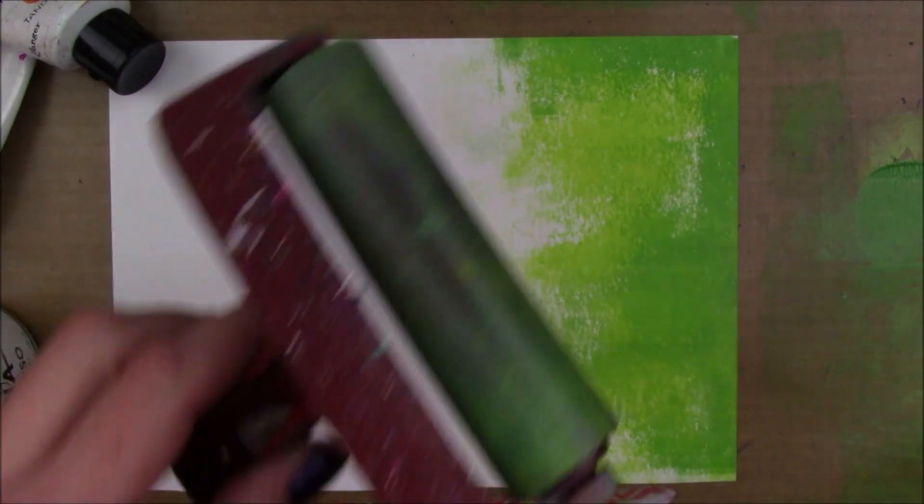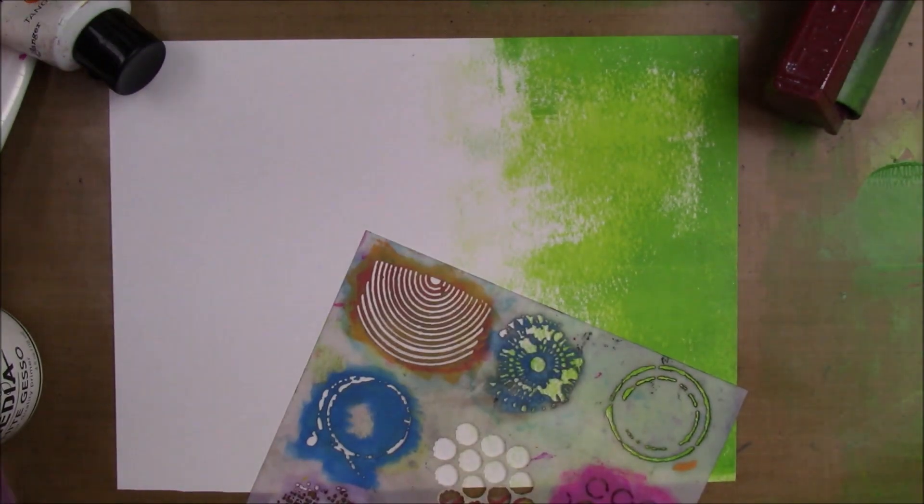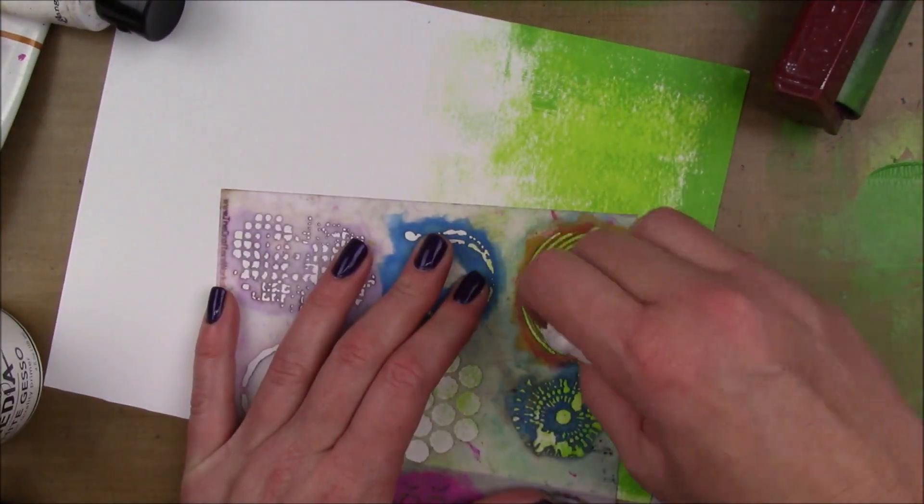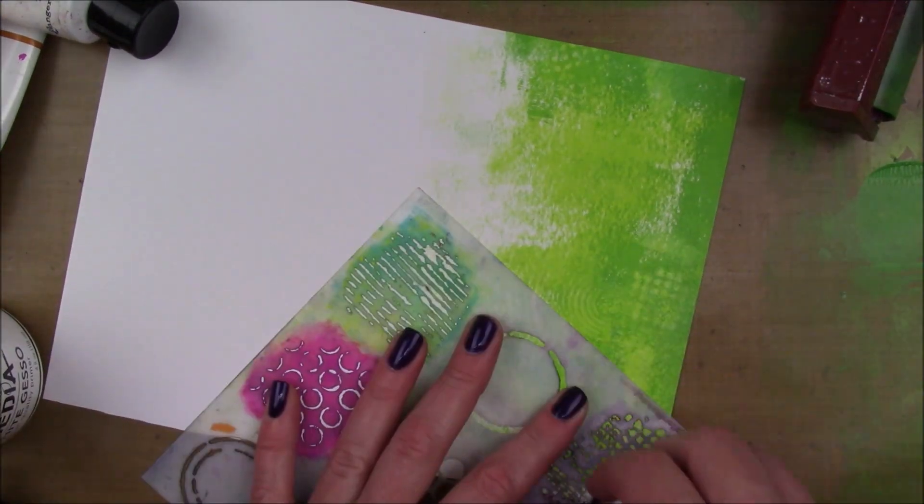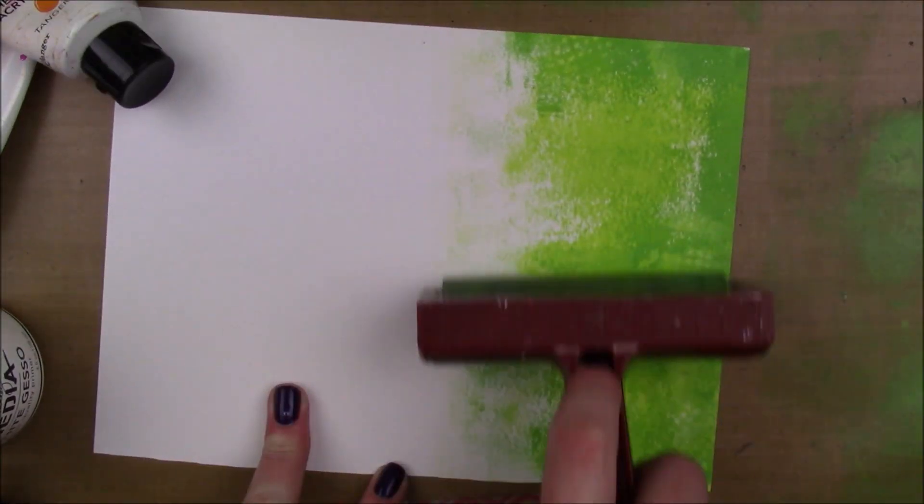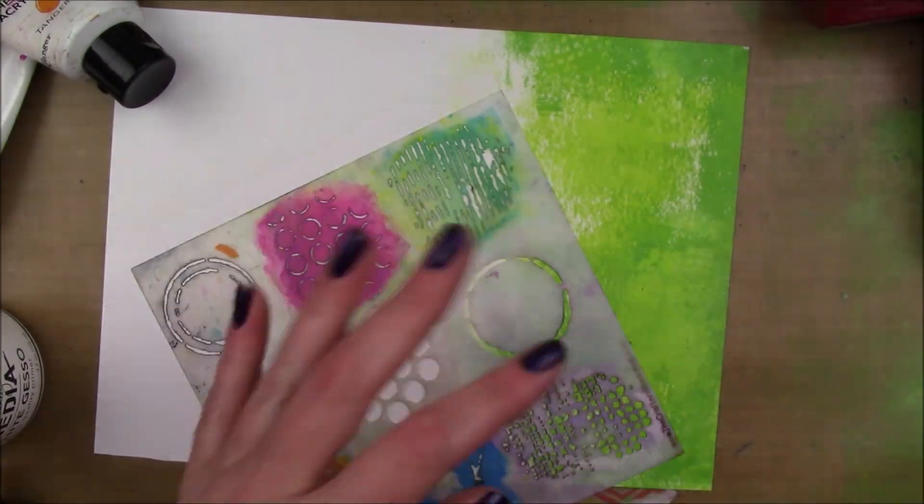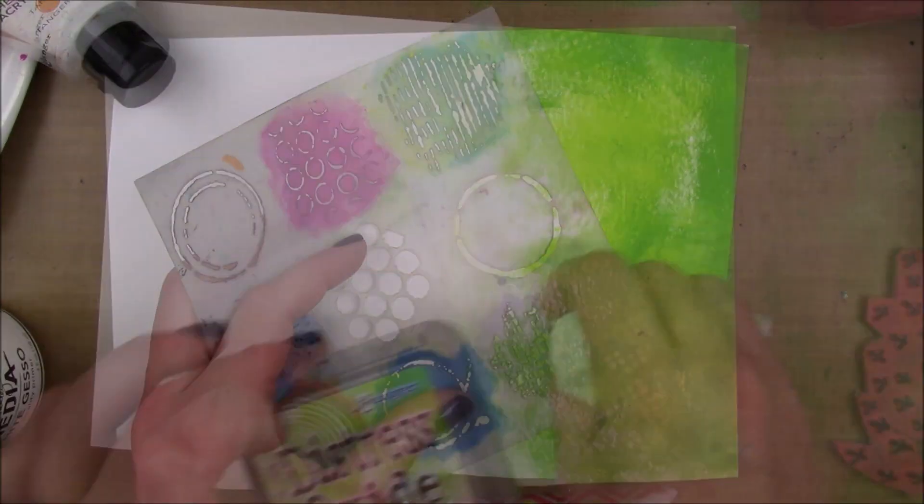I'm gonna take this Crafter's Workshop stencil and a clean baby wipe and remove some of that evergreen paint to reveal the texture of the stencil. Once I was happy with that, I'm gonna take some Distress Oxide in Twisted Citron and this stamp by Viva Las Vegas stamps called Cross X's.